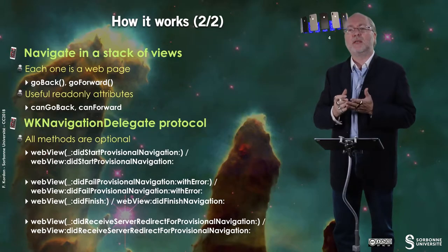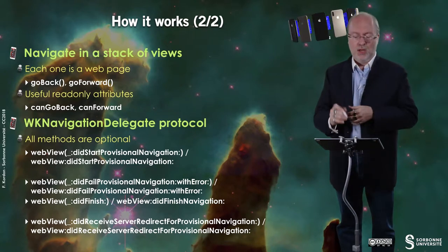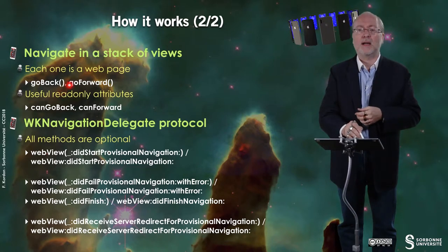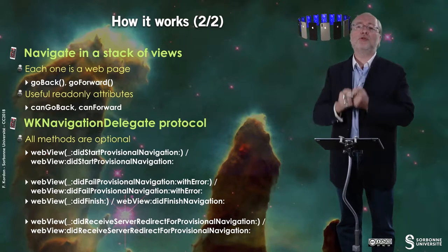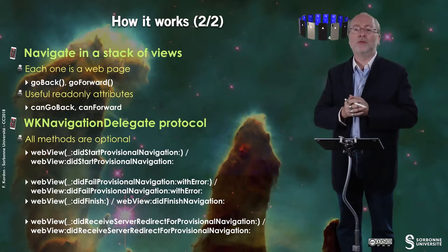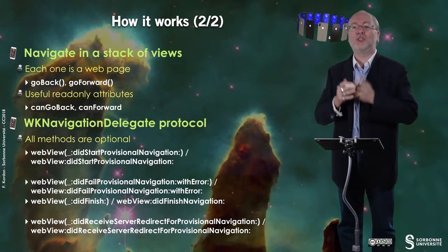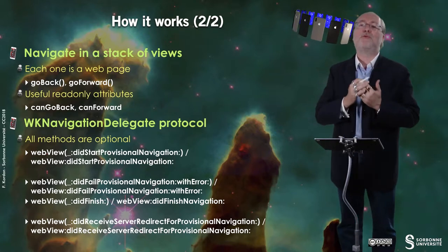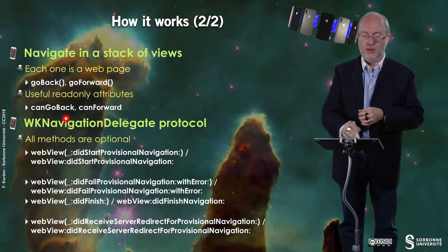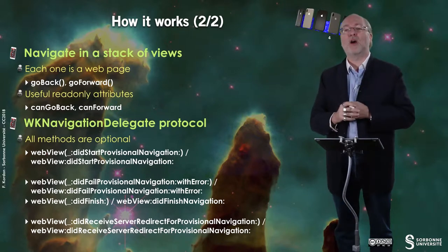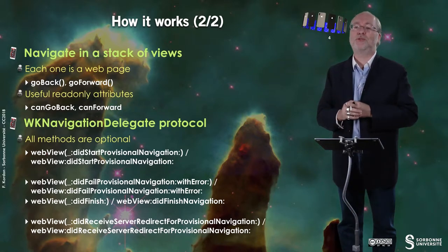A WK WebView embeds a stack of views. Each time you load a view or follow a link, this stack enriches with a new web page. You can navigate among these pages with two primitives: go back or go forward. There are also useful attributes to check whether you can go back or forward.